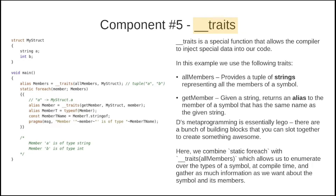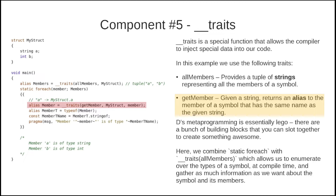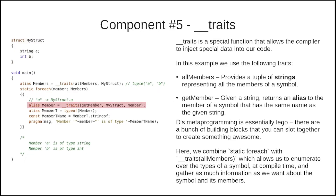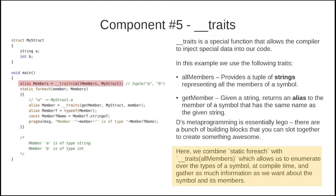Next up is __traits, which I'll refer to as just traits. Traits is a special construct that allows the compiler to inject special data into our code. In this example we use allMembers, which provides a tuple of strings representing all the members of a symbol, and getMember, which given a string returns an alias to the member of the symbol with the same name. For example, given myStruct with members a and b, getMember of a or b alongside myStruct gives us myStruct.a or myStruct.b. By combining static foreach with traits allMembers we can enumerate over all members of a symbol at compile time.